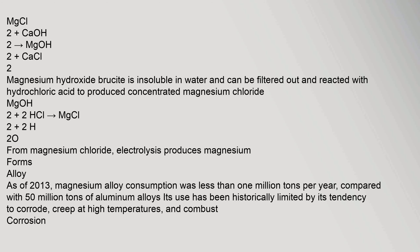Brucite is insoluble in water and can be filtered out and reacted with hydrochloric acid to produce concentrated magnesium chloride: Mg(OH)₂ + 2HCl → MgCl₂ + 2H₂O. From magnesium chloride, electrolysis produces magnesium.